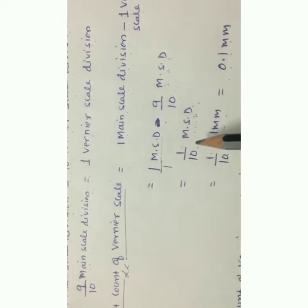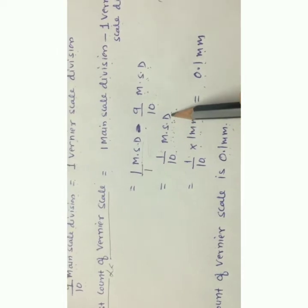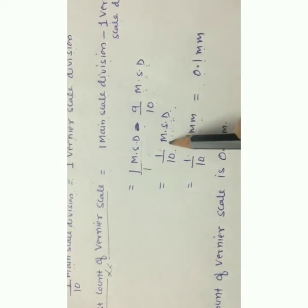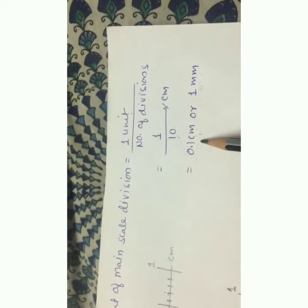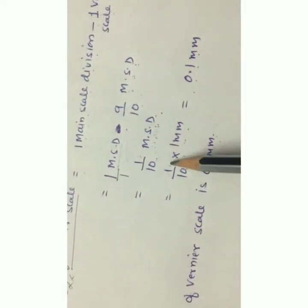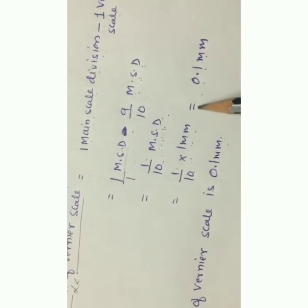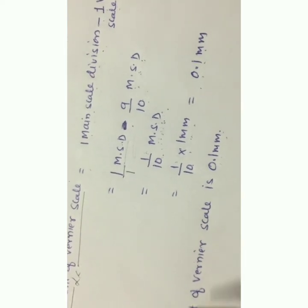Taking LCM gives 1/10 of a main scale division. Since the value of 1 main scale division is 1 mm (or 0.1 cm), putting this value in: 1/10 × 1 mm gives 0.1 mm. So the least count of the vernier scale is 0.1 mm.